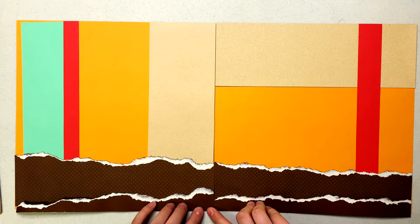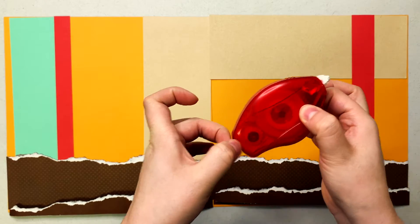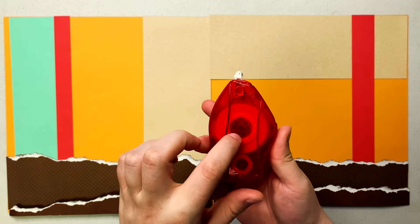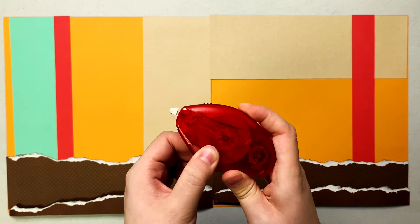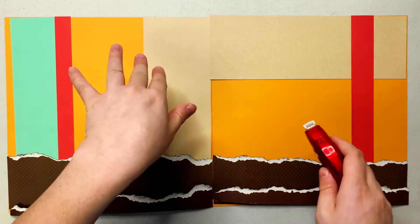So to adhesive today I'm going to be using my easy runner which is super nifty and nice. It's really easy just to replace that inside part anytime you run out of adhesive and it just runs on super smooth. So I'm going to go ahead and adhesive all of my pieces down.